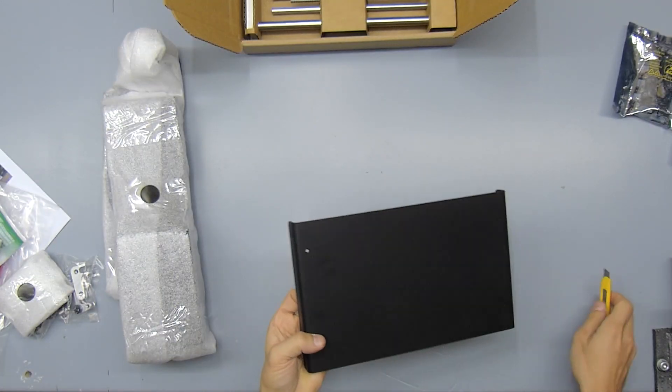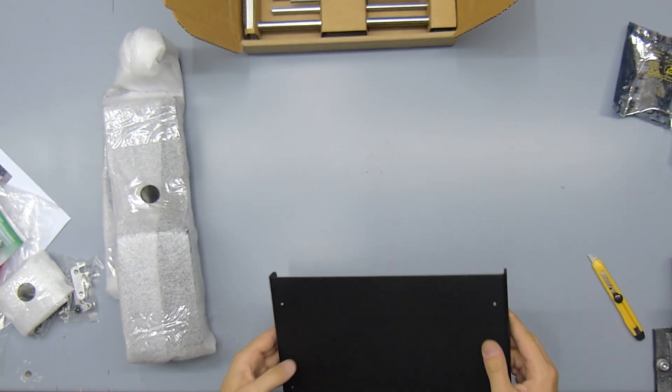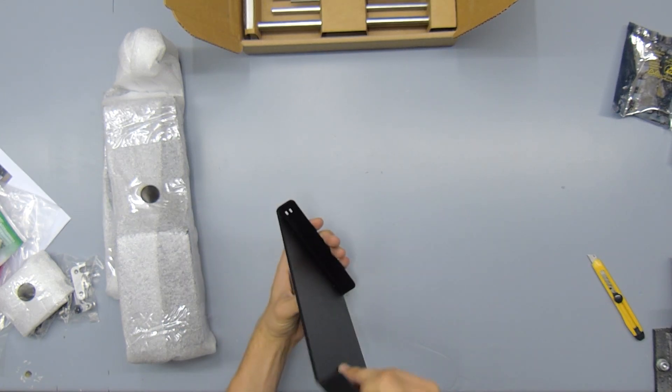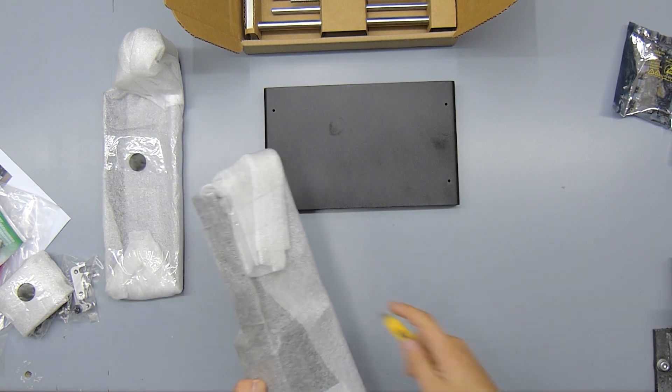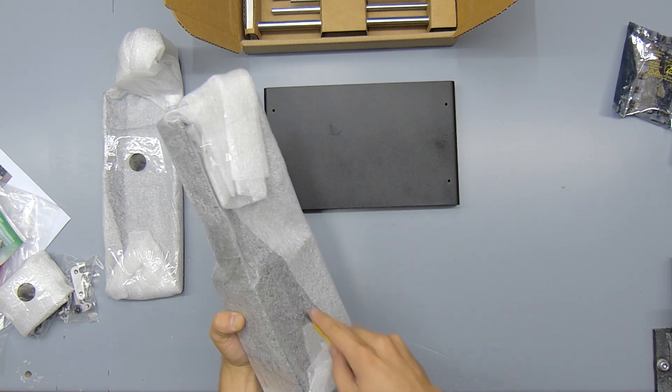So the first thing you're going to notice is that these are quite hefty parts. It doesn't get across on the pictures as well, but these are actually fairly thick aluminum, so there's nothing going to bend or wobble or get bent out of place there.